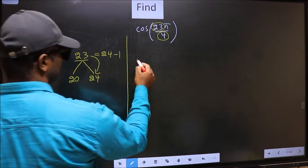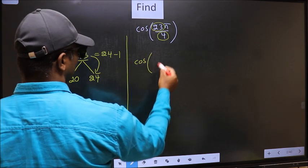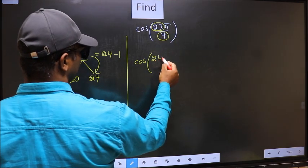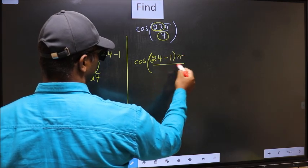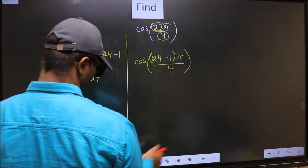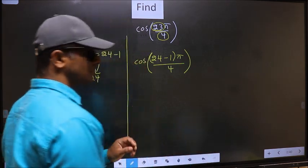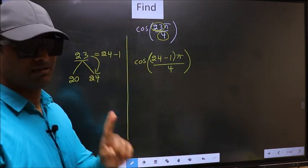So this will become cos. In place of 23, now you should write 24 minus 1, times π by 4. This is your step 1.